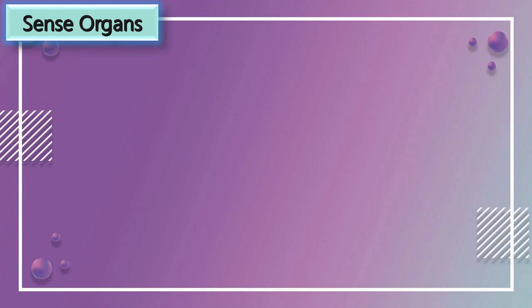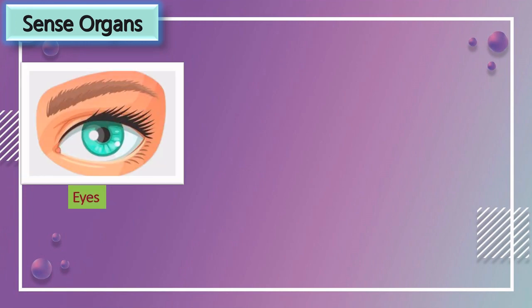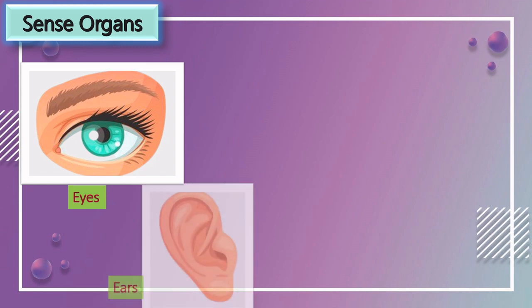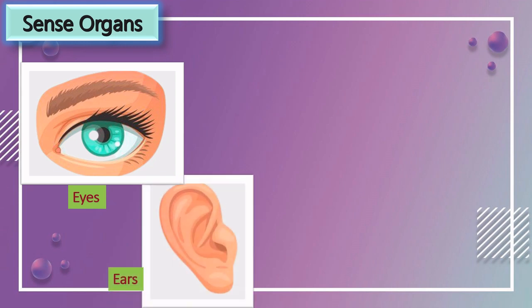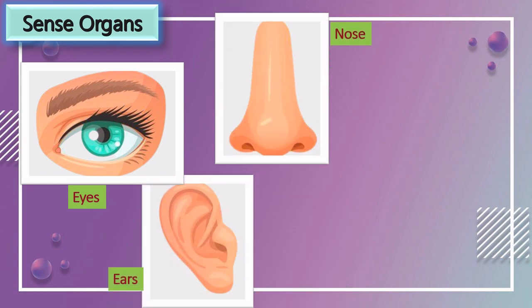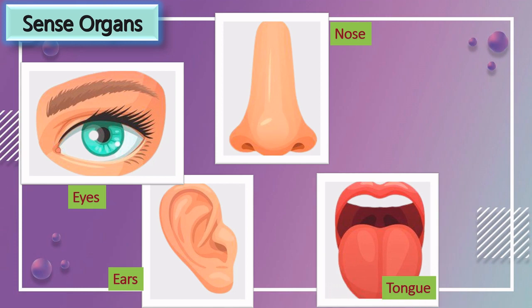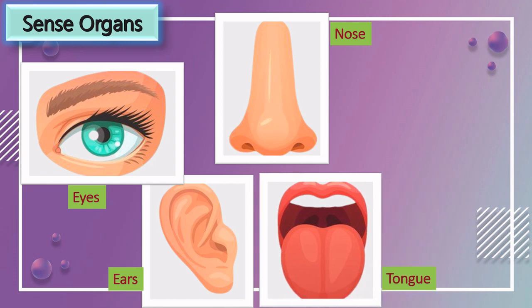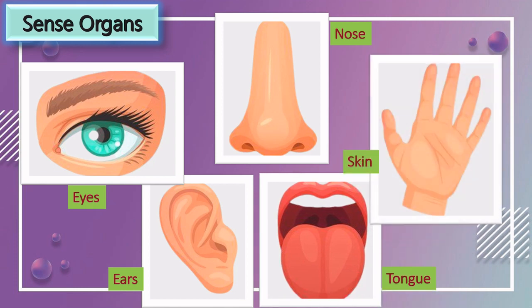Now let us see about sense organs. We have 5 sense organs: eyes, ears, nose, tongue, and skin.